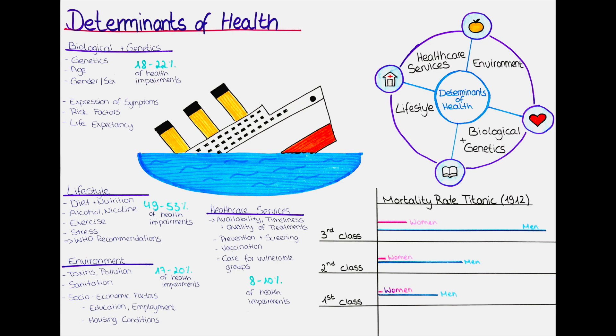This is especially important, as with proper education and healthcare policies, many of these deaths could be avoided. The WHO recommends that adults engage in at least 150 minutes of moderate-intensity aerobic physical activity per week, or at least 75 minutes of vigorous-intensity aerobic physical activity per week. Additionally, muscle strengthening activities involving all major muscle groups should be done at least two days per week.